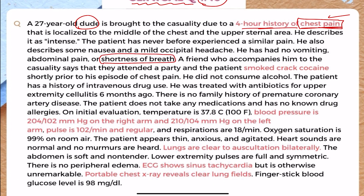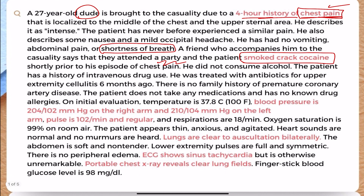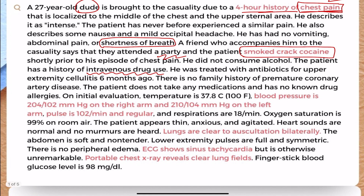A friend who accompanies him to the casualty says they attended a party and the patient smoked crack cocaine shortly prior to his episode of chest pain. He did not consume any alcohol. The patient has a history of intravenous drug abuse and was treated with antibiotics for upper extremity cellulitis six months ago, possibly due to syringe use. There is no family history of premature coronary artery disease, and the patient takes no medications and has no known drug allergies.